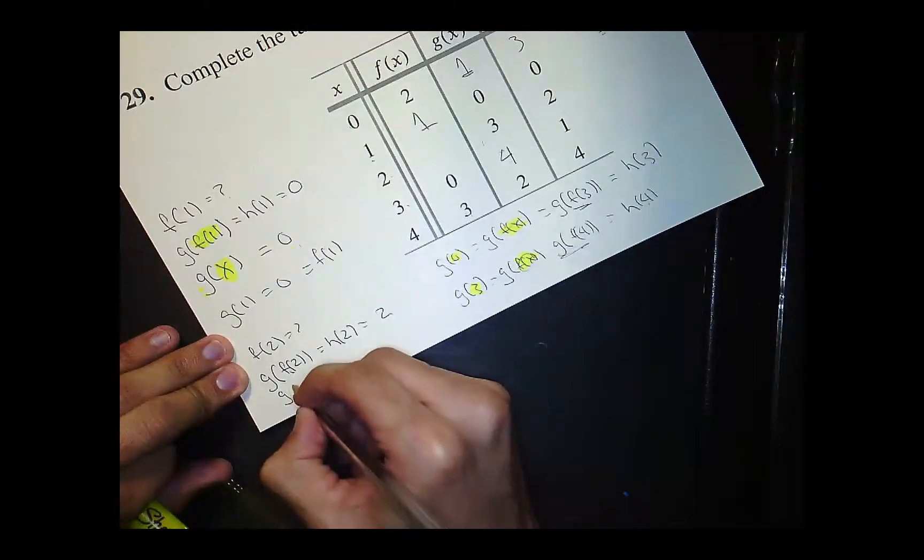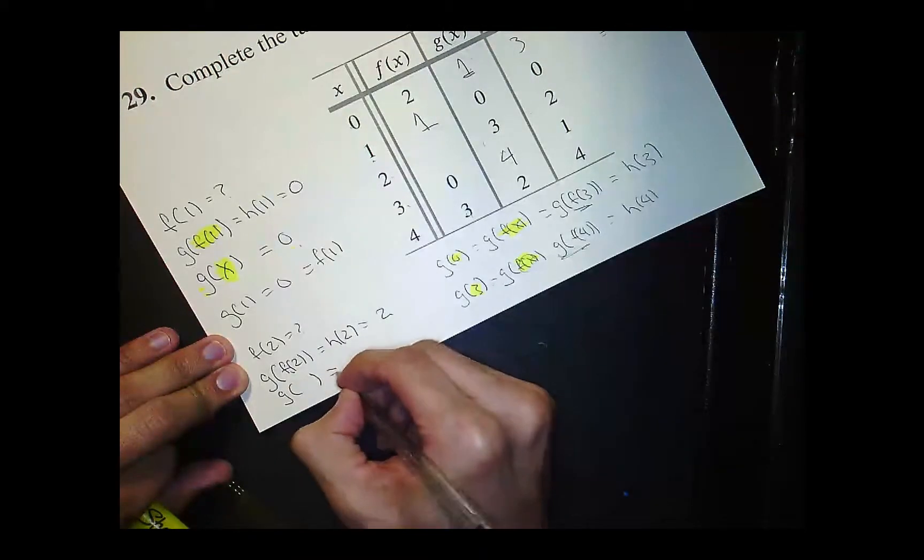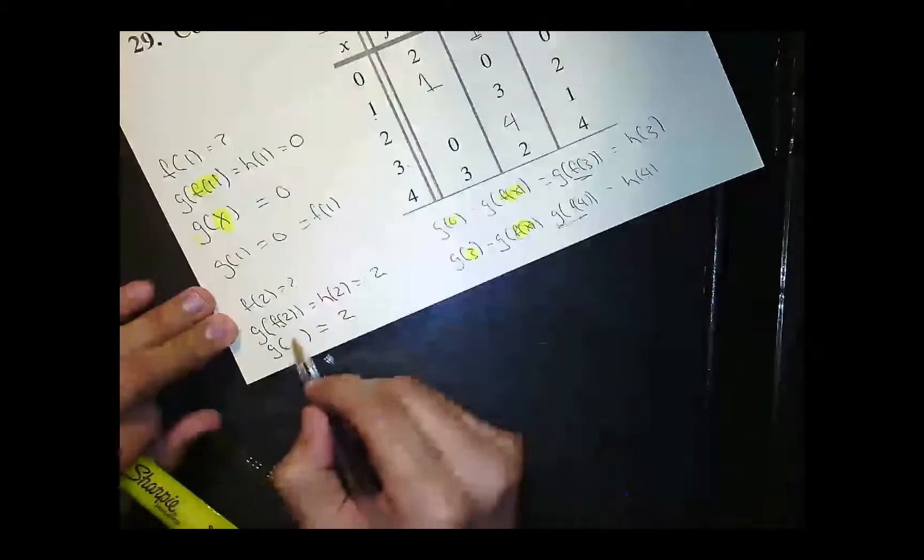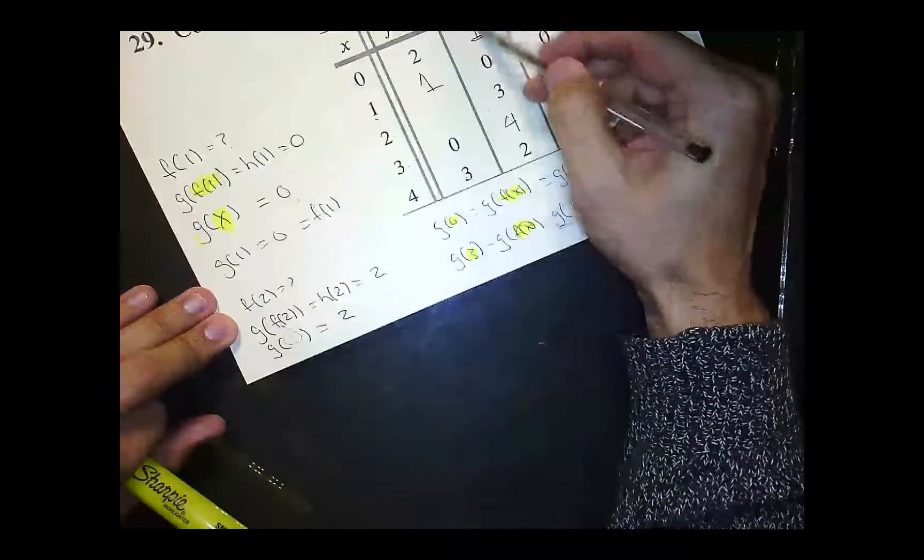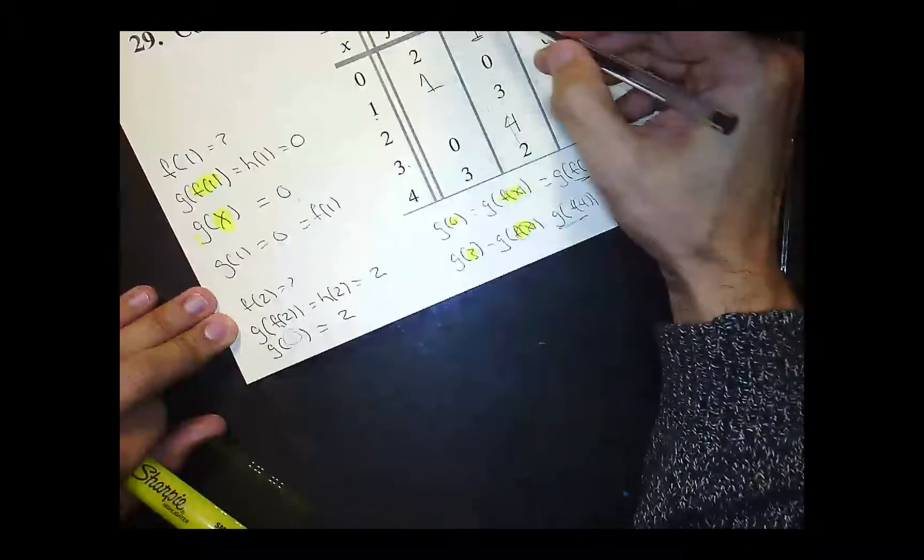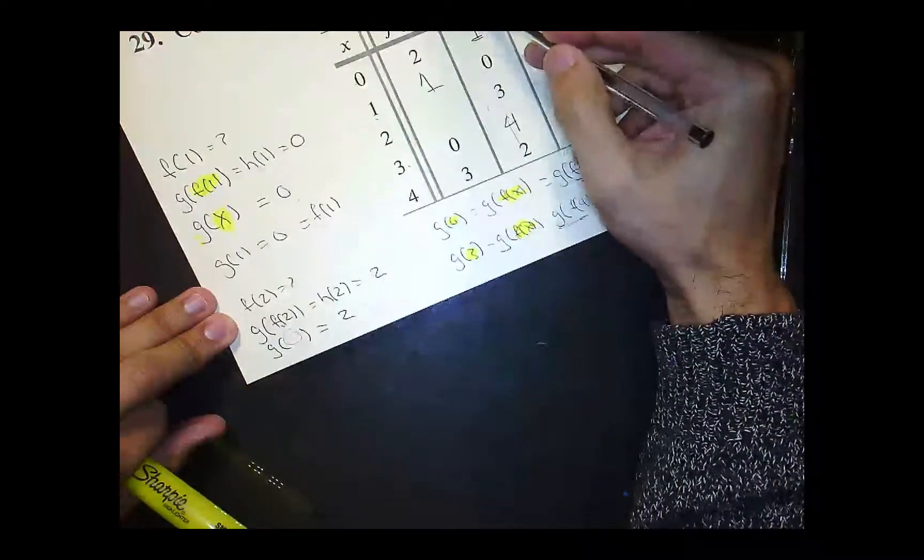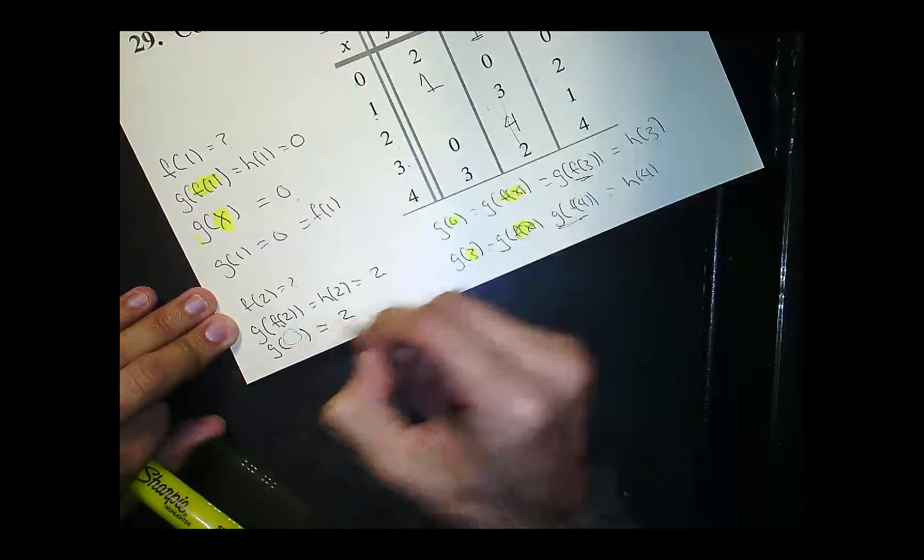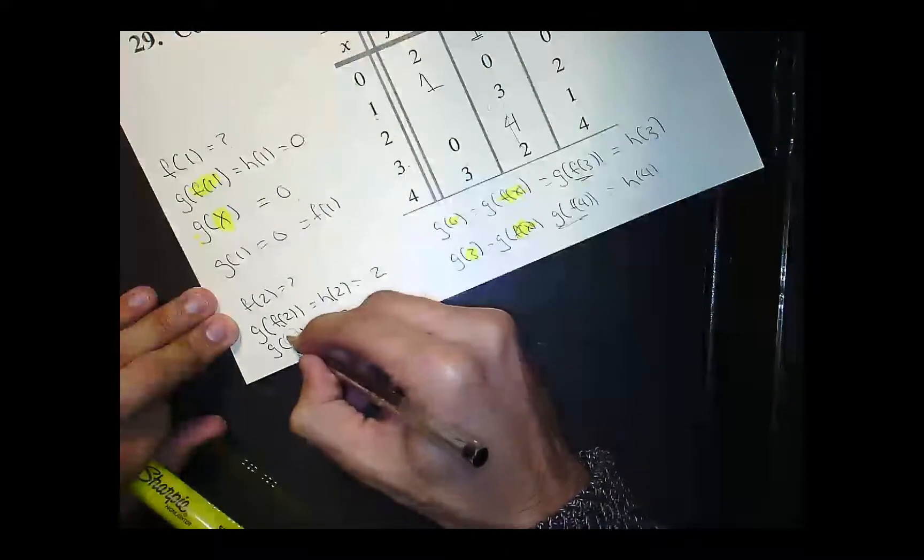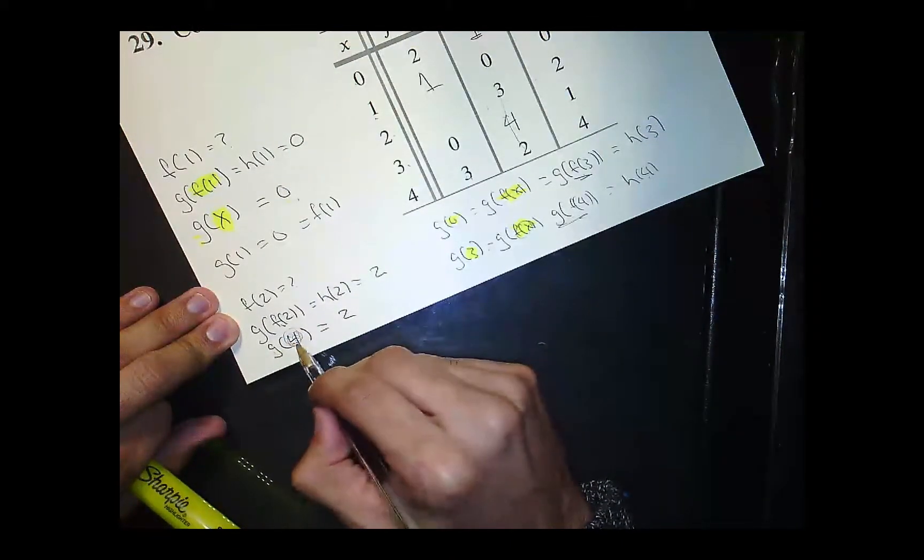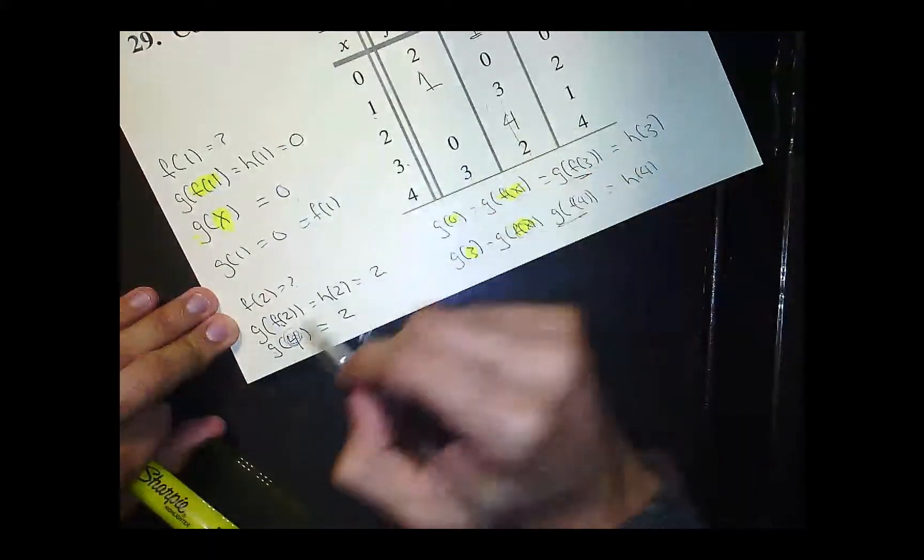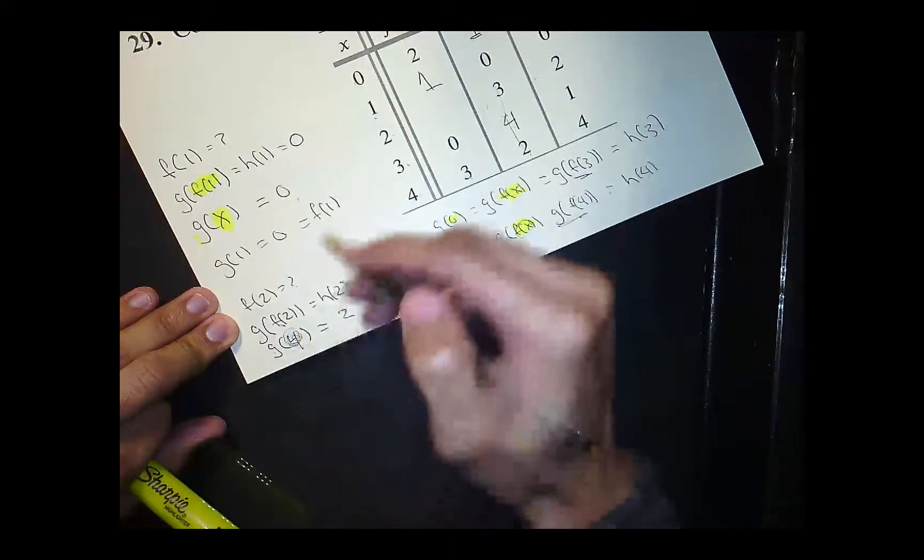So then it becomes a matter of, well, g of what equals 2, right? When does g equal 2? Well, g equals 2. g equals 2. See, I looked at the wrong thing. g equals 2 when x equals 4. So then that means that this is 4. g of 4 equals 2, right? Yeah, it does. g of 4 equals 2. So that means f of 2 equals 4.